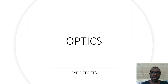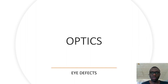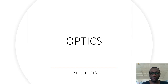You are welcome. Let's continue with the topic optics, and today we are going to discuss about eye defects. In the previous lessons, we learned lenses and their types. We learned that we have a converging lens which has a positive focal length and a diverging lens which has a negative focal length.